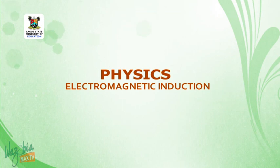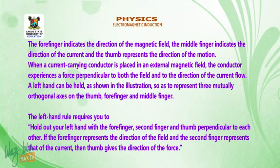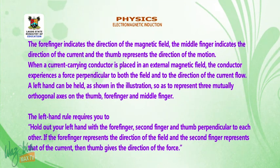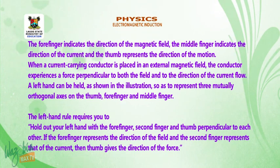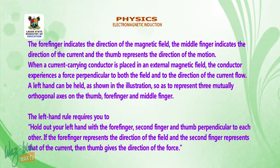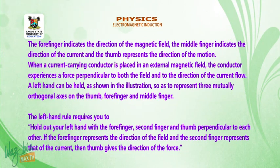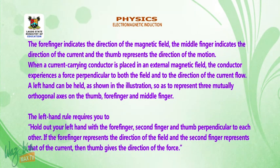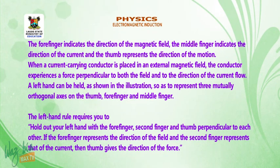Welcome back. The forefinger indicates the direction of the magnetic field, the middle finger indicates the direction of the current, and the thumb represents the direction of the motion. When a current-carrying conductor is placed in an external magnetic field, the conductor experiences a force perpendicular to both the field and to the direction of the current flow. Hold out your left hand with your forefinger, second finger, and thumb perpendicular to each other. If the forefinger represents the direction of the field and the second finger represents that of the current, then the thumb gives the direction of the force.